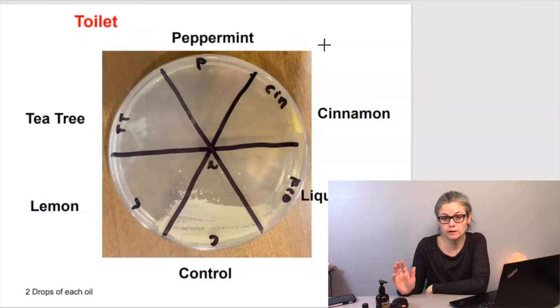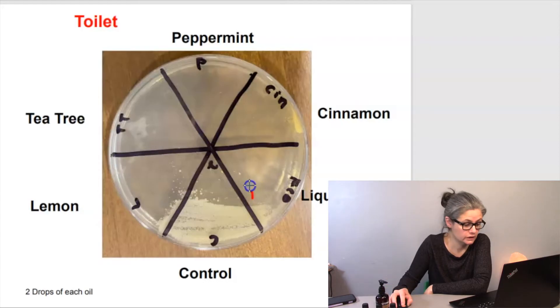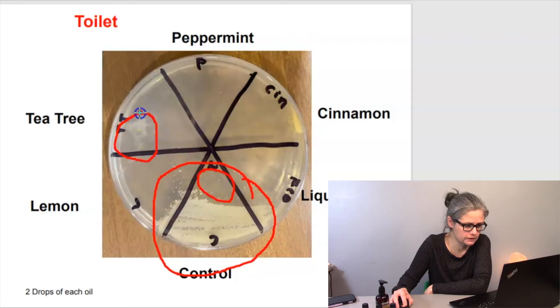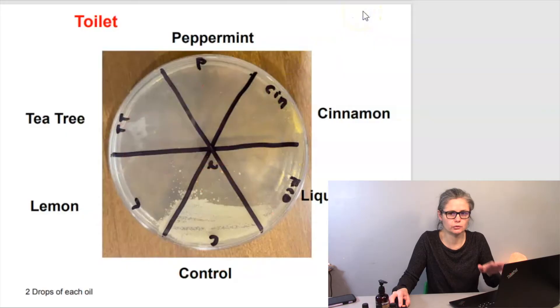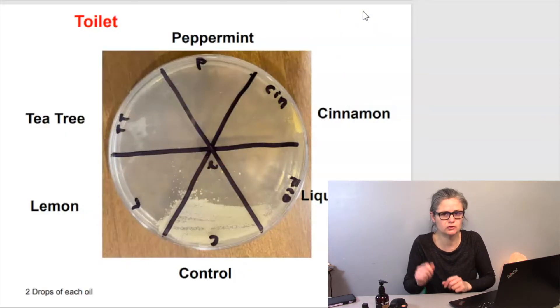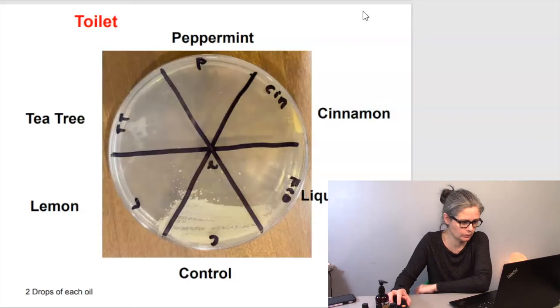Next, let's look at the swab from the toilet. So you can see here from the control, there is definite growth, but it stops here. So I'm not really certain what happened here. Then there's also a very strange looking, maybe a mold growing here on the tea tree oil section. Nothing in peppermint, nothing in cinnamon, nothing in liquid coconut. So I decided to redo this test and just continue to use just the sink bacteria. Let me show you what I did.